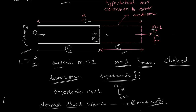As we keep increasing the length, the location of the normal shock wave moves further upstream. Eventually the shock occurs at the duct inlet, and further increasing the duct length moves the shock to the diverging section of the converging-diverging nozzle that generates supersonic flow at the duct inlet.